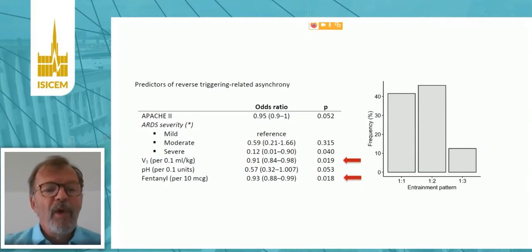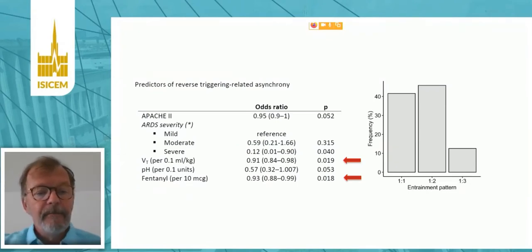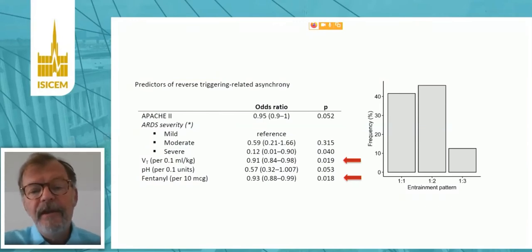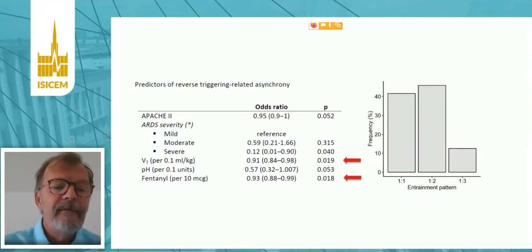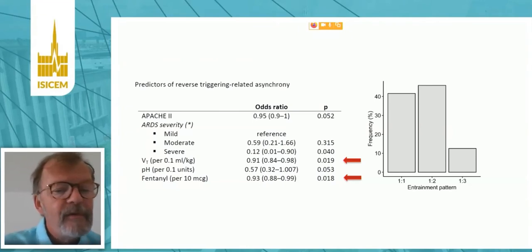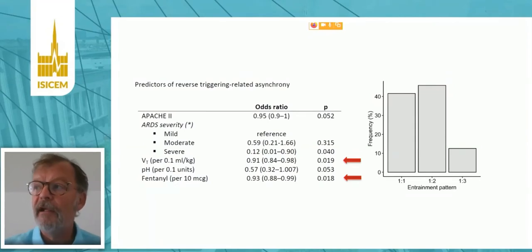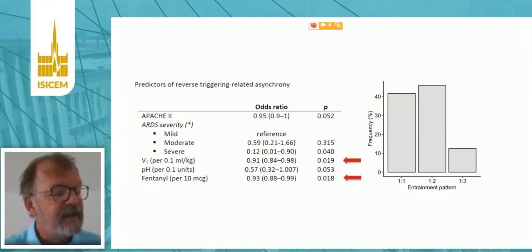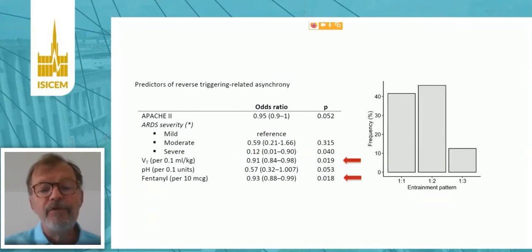They also tried to see what could predict the presence of reverse triggering. Interestingly, they found that tidal volume was a predictor. In other terms, the lower the tidal volume, the higher the risk of having reverse triggering. They also found that the lower the fentanyl dose, the higher the risk of reverse triggering. So reverse triggering was more frequent when the volume was small — which is frequent now with lung protective ventilation — but also with a little less sedation. This is in line with findings suggesting that it predicts the patient is going to switch to spontaneous ventilation.